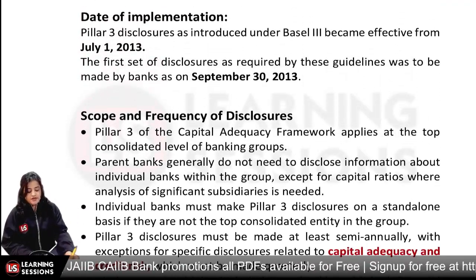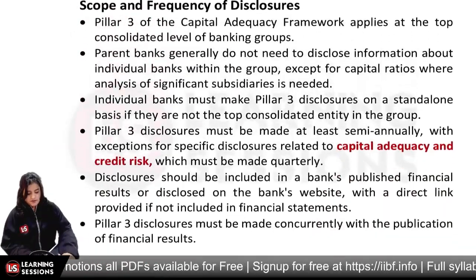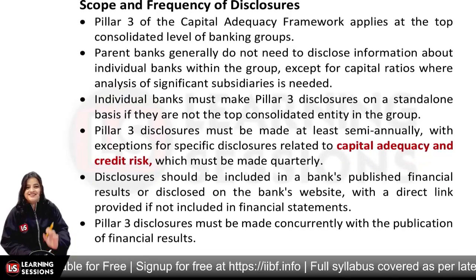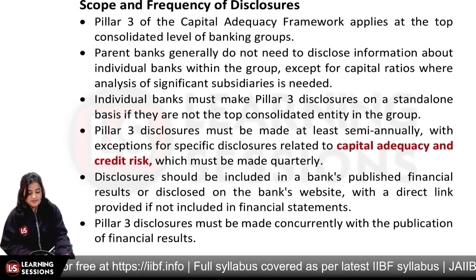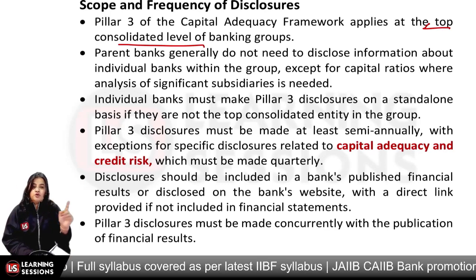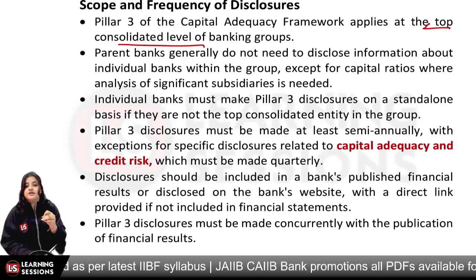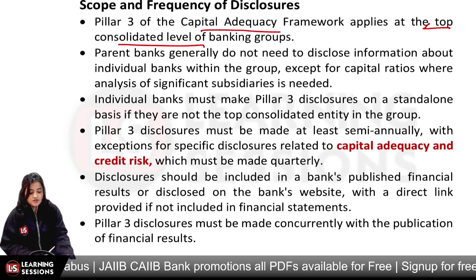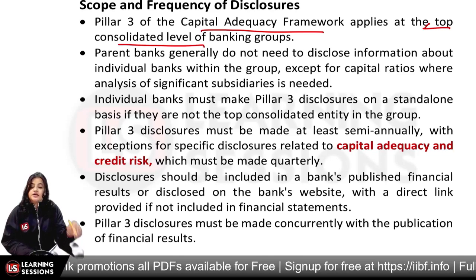Banks should have a formal disclosures policy that proves these are the things they are going to disclose in the balance sheet. Internal controls and disclosures — we need to give all disclosures. Then the date of implementation — we don't need to keep track of that date. Now, scope and frequency of disclosures: Pillar 3 of the capital adequacy framework applies at the top consolidated level of banking groups.